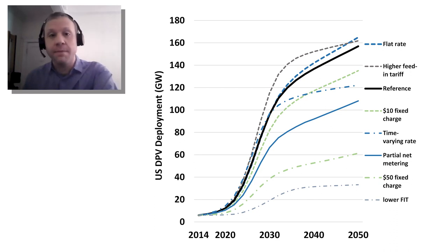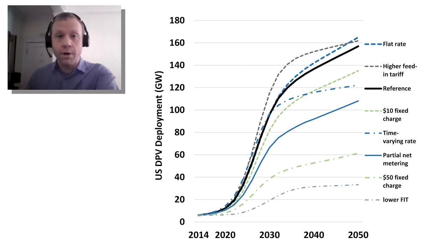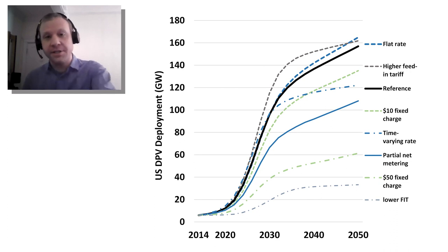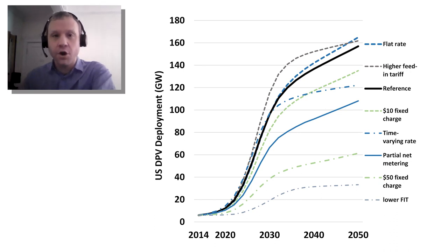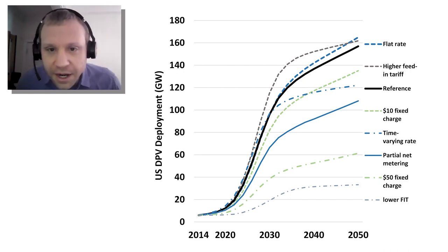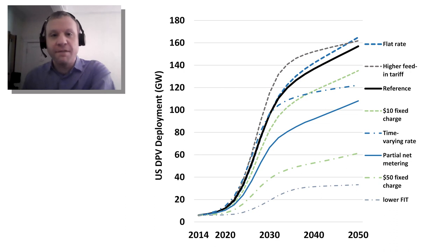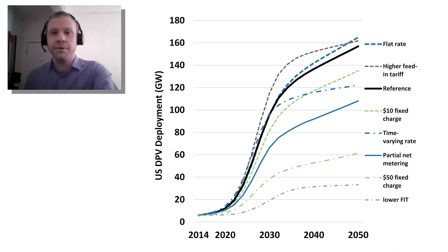There's a move toward increasing time-of-use rates in residential rate design, and from the perspective of maximizing distributed PV on the system, that's probably not an unalloyed good thing — it would put a damper on total PV relative to the current status quo. The reference case terminates in 2050 at nearly 160 gigawatts. The TOU case — the dashed and dotted blue line — ends at about 120 gigawatts, something like 25 percent lower with all customers on TOU. There are good reasons to support TOU, but we're balancing multiple competing priorities.